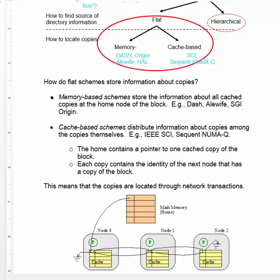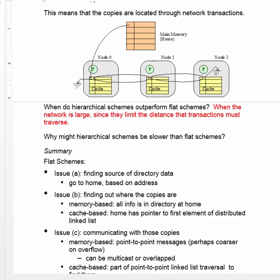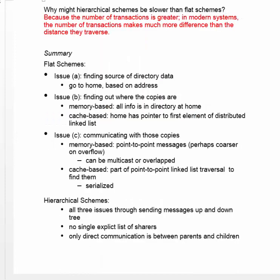This means that copies have to be located through network transactions. We've seen two alternatives: hierarchical schemes and flat schemes. Hierarchical schemes might perform better when information is widely distributed but only in certain regions, since a hierarchy can quickly direct you to those regions without sending messages across the entire system. However, in modern systems, the number of messages matters more than distance, since messages are routed very efficiently through intermediate nodes. So flat schemes, which send fewer messages, might be more efficient than hierarchical schemes even though hierarchical schemes send messages over a shorter distance.